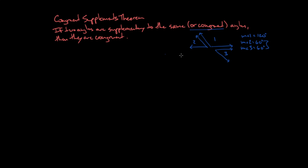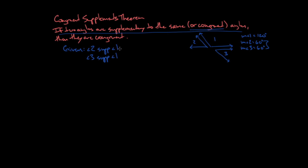To prove this, we need our diagram and our givens and our prove statement. My givens reflect the hypothesis: angle 2 is supplementary to angle 1, and angle 3 is supplementary to angle 1. I'm going to prove the 'same angle' part — the congruent angle part would be an obvious extension. What I'm trying to prove is the conclusion: that angle 2 is congruent to angle 3.